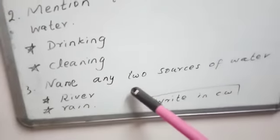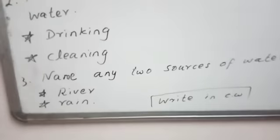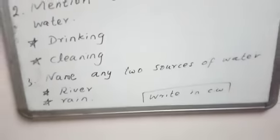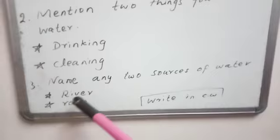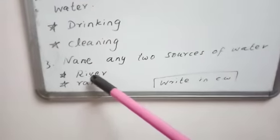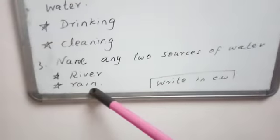Name any two sources of water. You can write rain, river, pond, well. Here I wrote river and rain. R-I-V-E-R river, R-A-I-N rain.